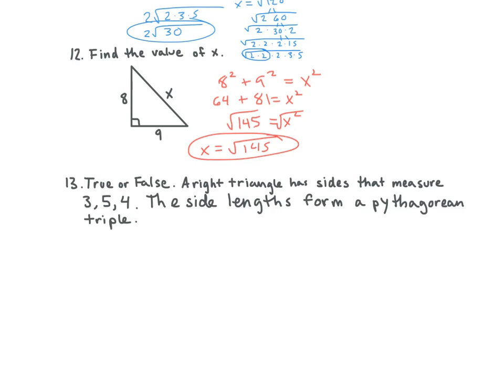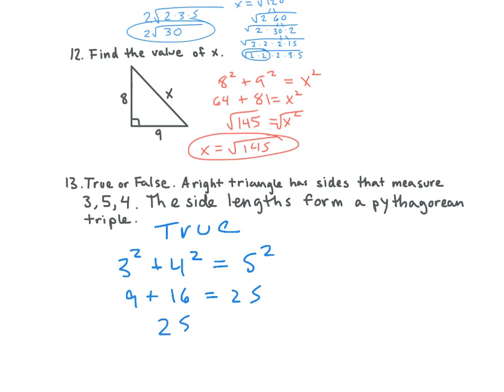True or false? A right triangle has sides that measure 3, 5, and 4. The side lengths form a Pythagorean triple. I put true. Why? I organized them smallest to largest — 3, 4, 5 — and then 3 squared plus 4 squared equals 5 squared: 9 plus 16 equals 25. Perfect. So not only are they whole numbers, which makes them a Pythagorean triple, but we also need them to satisfy a squared plus b squared equals c squared. Those two things make this true.